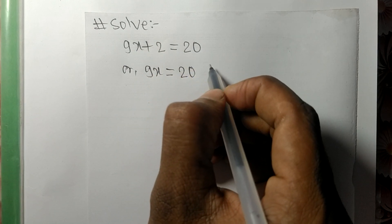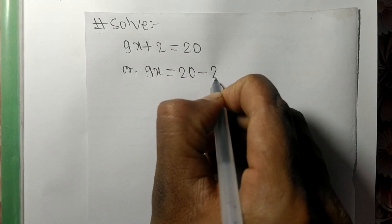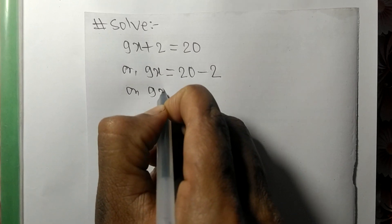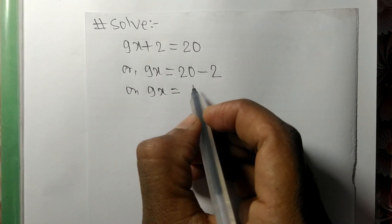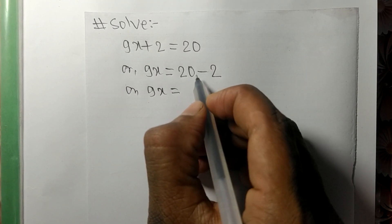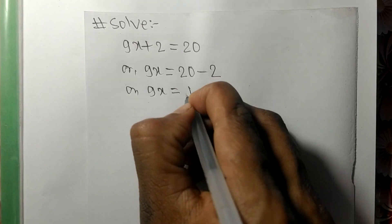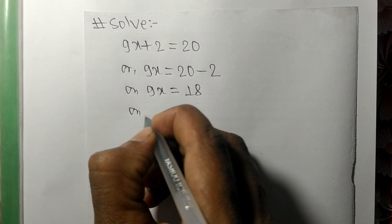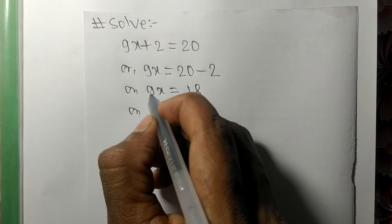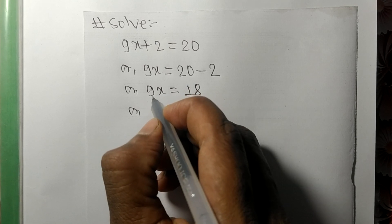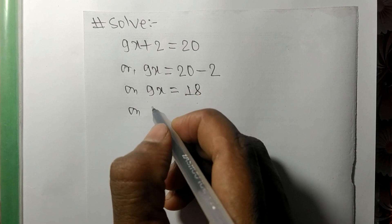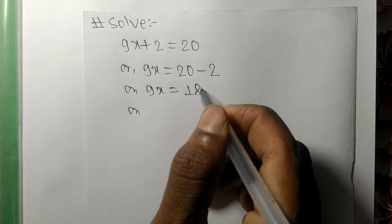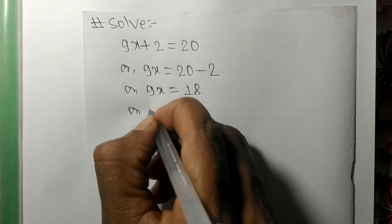So now 9x is equal to 20 minus 2, which means it is 18. Now x contains 9 in multiplication form, so while moving it to the opposite side it becomes division.